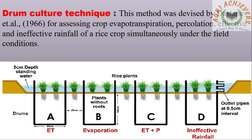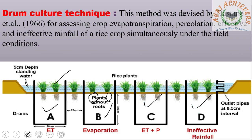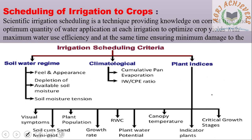Drum Culture Technique: This method was developed by Dash 10, who also gave the statement of effective rainfall for assessing crop evapotranspiration, percolation, and effective and ineffective rainfall of a rice crop simultaneously under field conditions. As shown in the picture, four drums are taken with a rice field of 5 meters water depth. In the first drum, evapotranspiration is calculated. In the second drum, plants without roots are used to calculate evapotranspiration. In the third drum (C), evapotranspiration plus percolation are calculated. In the fourth drum (D), ineffective rainfall is calculated.